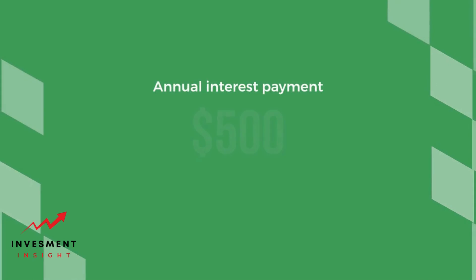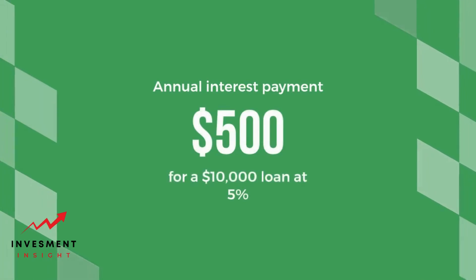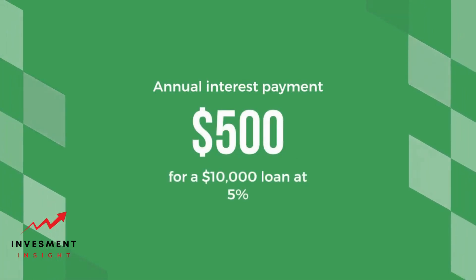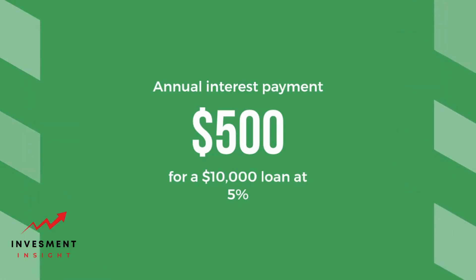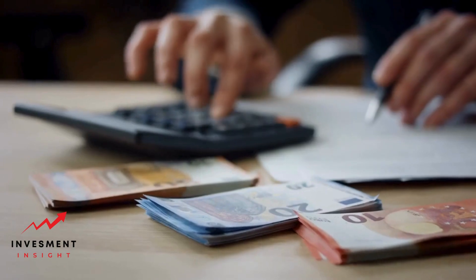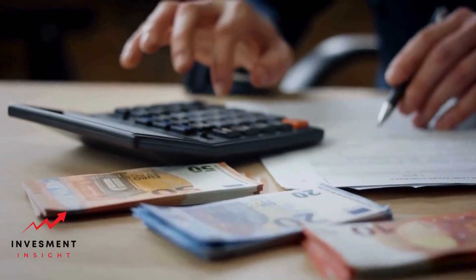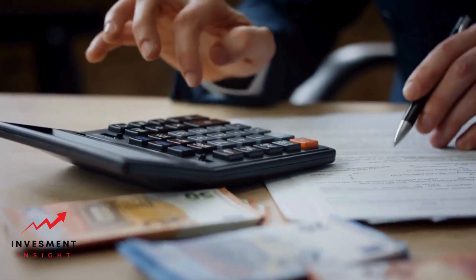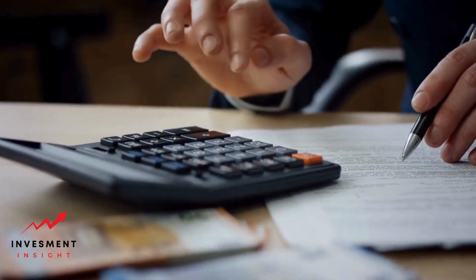Calculation. The nominal interest rate is expressed as a percentage and is calculated by dividing the annual interest payment by the principal amount of the loan or investment. For example, if a borrower takes out a loan of $10,000 at a nominal interest rate of 5%, the annual interest payment would be $500.